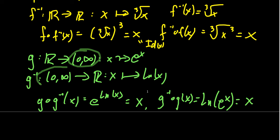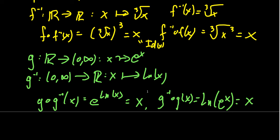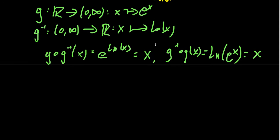To make g invertible, we must restrict its co-domain to (0, ∞). If we allowed the co-domain to be all real numbers, the inverse would require the natural log to be defined for all real numbers — but the natural log of negative one, for example, has no real value. So the existence of inverses depends on the domain and co-domain. We must be explicit about exactly who the domain and co-domain are for each function.